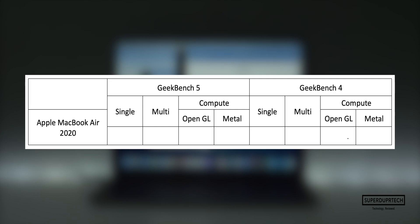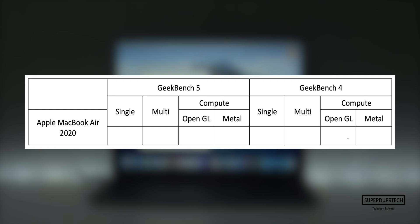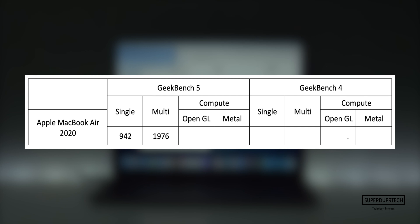The first test that I ran on this MacBook Air was Geekbench 5. Geekbench gives a score for single and multi-threaded tasks, and after these have been performed it will give a score based on its performance and the time taken to perform them. The score that I got for the single core was 942, whereas for the multi-core I got a score of 1976.